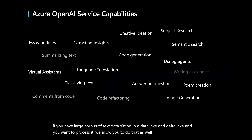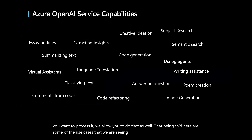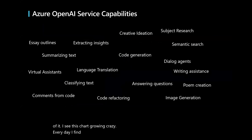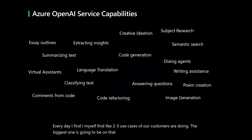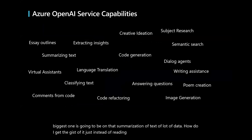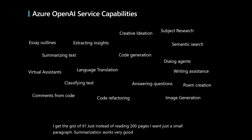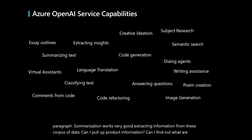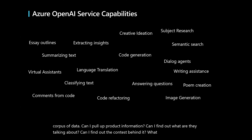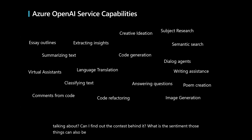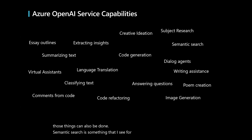Here are some of the use cases we are seeing — and by no means is this the end. I see this chart growing. The biggest one is summarization of text — how do I get the gist of 200 pages in just a small paragraph? Summarization works very well. Extracting information from large corpus of data — pulling product information, understanding context, finding sentiment — those things can also be done.